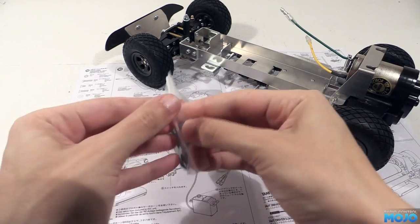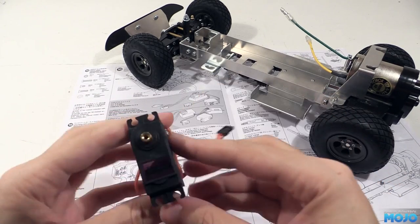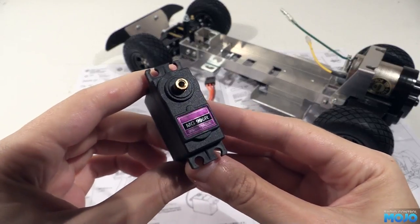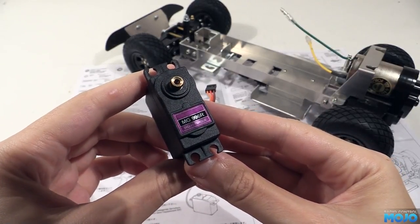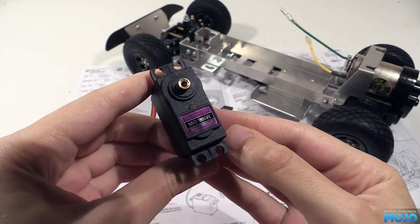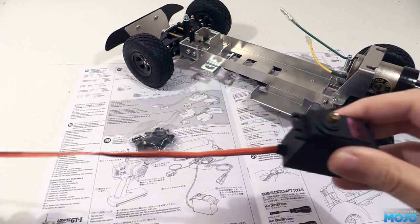First up we have the steering servo. It's a Tower Pro MG996R. The spec has more than enough speed and torque. If anything, it's well over-spec'd. You can find them for under £5 without trying very hard.